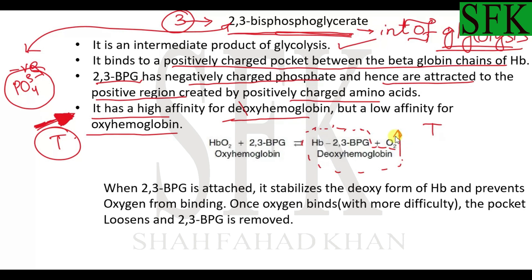However, in the lungs, due to the very high partial pressure of oxygen, oxygen manages to bind to one of the four heme groups. Once oxygen binds, 2,3-BPG is no longer able to remain attached to the hemoglobin. Because hemoglobin has now converted to oxyhemoglobin, 2,3-BPG detaches from the hemoglobin structure.